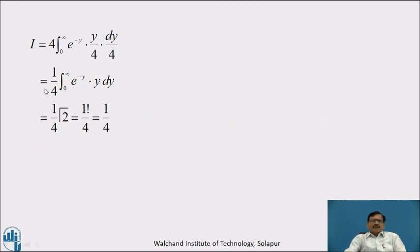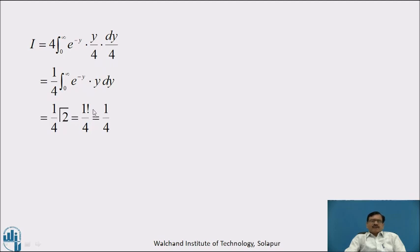Therefore, the given integral can be written as 4 into integration from 0 to infinity of e raised to minus y into y by 4 into dy by 4. Here 4 and 4 cancel, giving 1 by 4 into integration from 0 to infinity of e raised to minus y into y dy, which equals 1 by 4 into Gamma of 2. Because here n minus 1 is 1, therefore n is 2. Gamma of 2 equals 1 factorial by using the property Gamma of n plus 1 equal to n factorial, which equals 1 by 4.